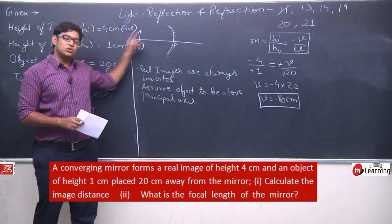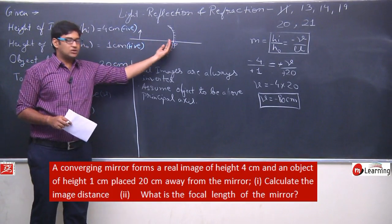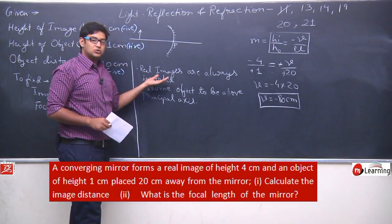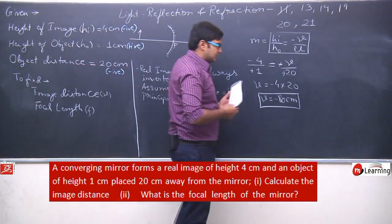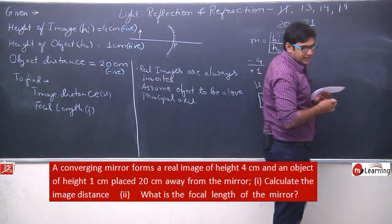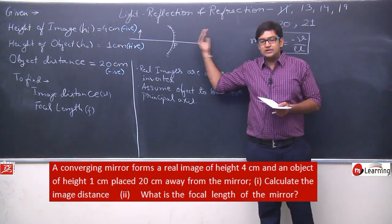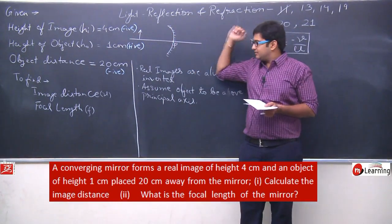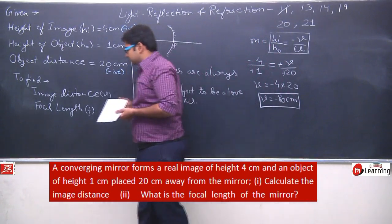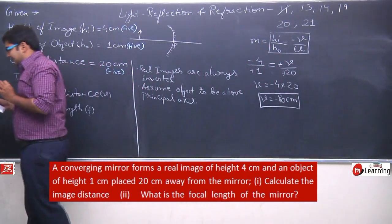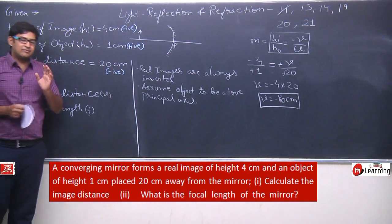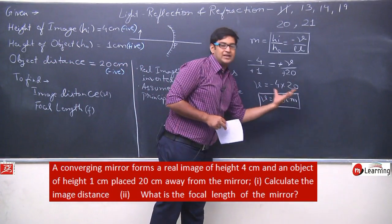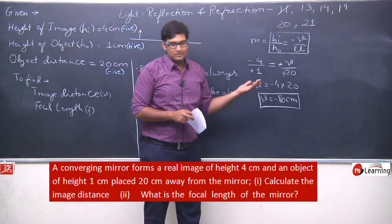Therefore, v = −80 centimeters. So the distance of the image is −80 centimeters. Minus 80 means from the pole to the left side. So the image is forming on the left side. Obviously, if it is a real image, it must form on the left side. A virtual image forms on the right side. A real image forms in the direction of the reflecting surface.